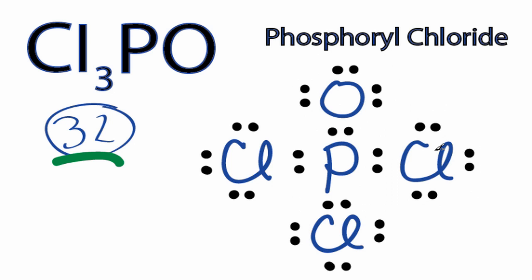However, because Phosphorus is below period 2, row 2, on the periodic table, we really need to check our formal charges to see if this is the most plausible Lewis structure for Cl3PO.